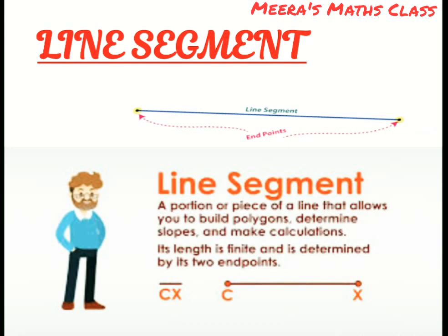Line segment, a portion or piece of a line that allows you to build polygons, determine slopes, and make calculations. Its length is finite, that means we can measure it with a scale, and is determined by its two end points. So if we take a scale and we measure from one end to the other, we can measure the line segment.